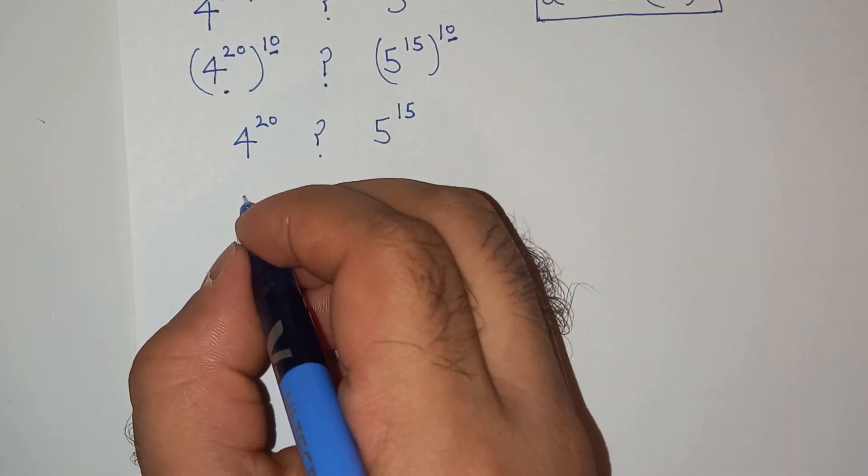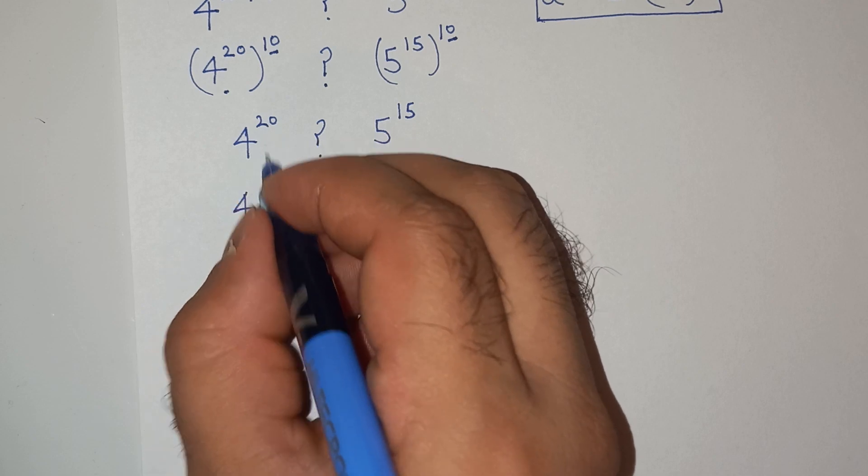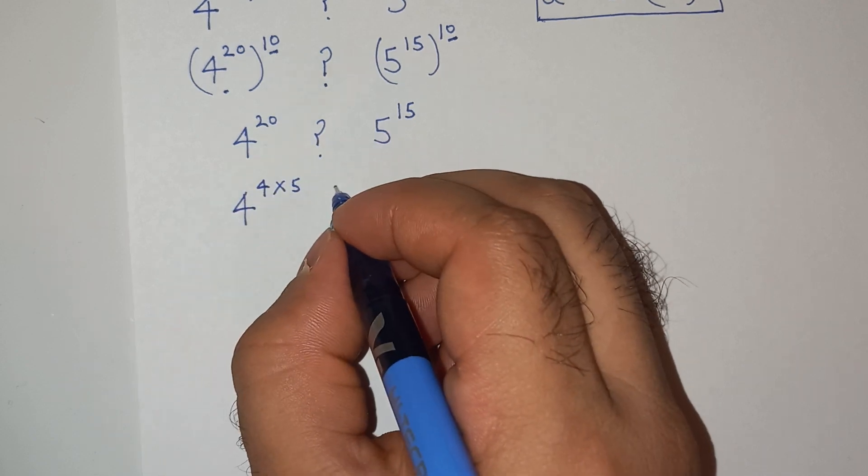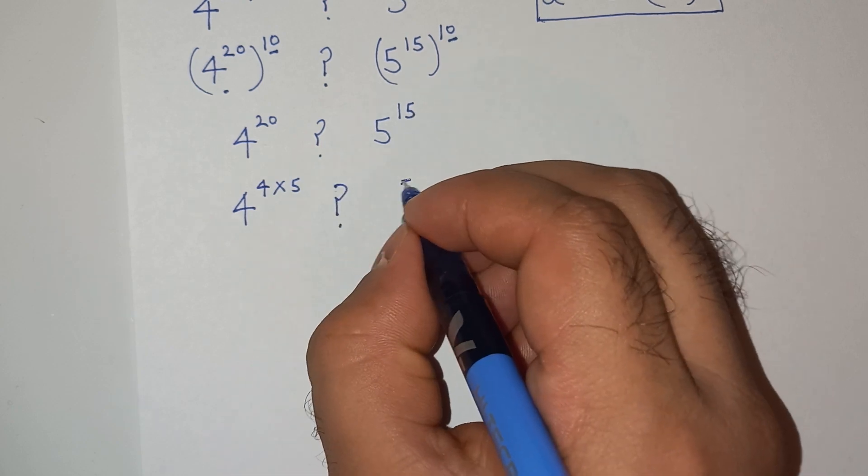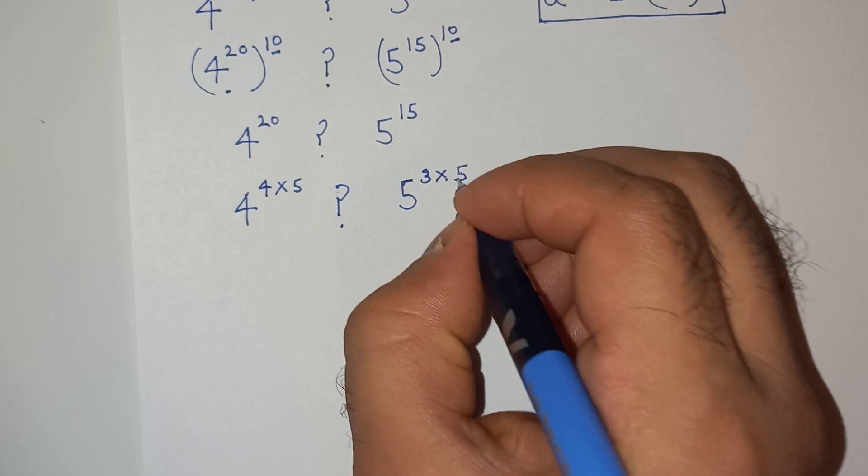Now this 4 power 20 can be written as 4 power 20. 20 can be written as 4 multiplied 5. And this 5 power 15 can be written as 5, 15 will be 3 multiplied 5.